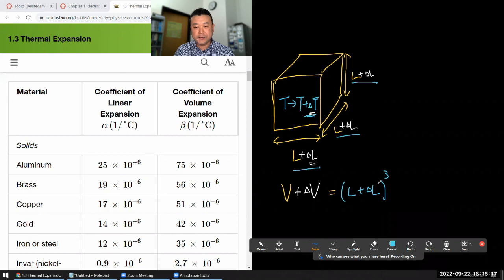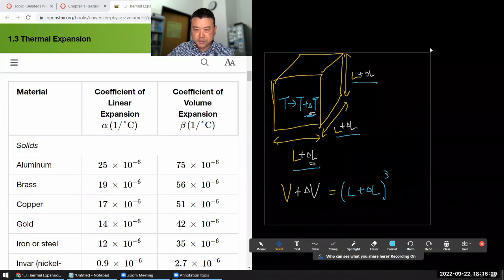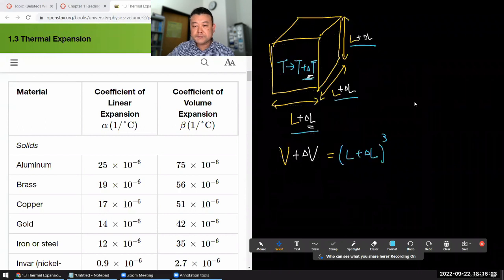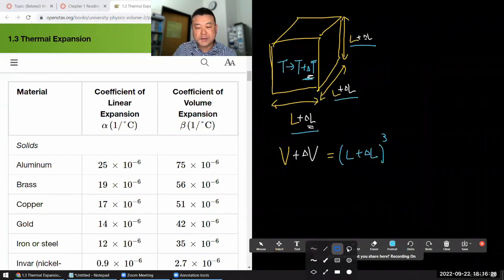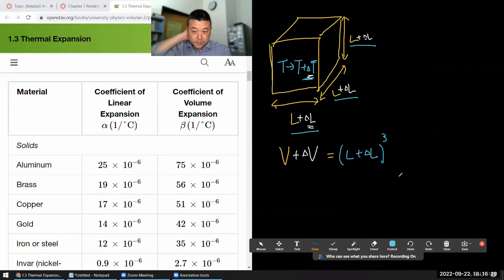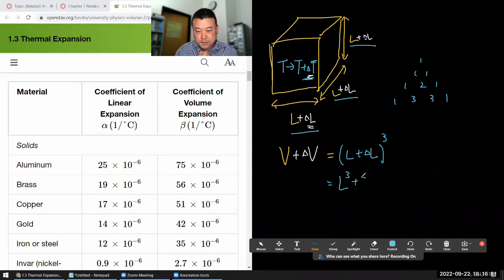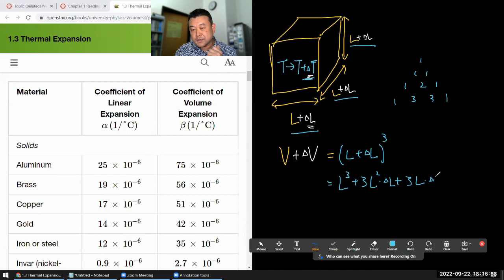If you're just looking at this algebraically, it's looking a little bit daunting. Although, I think I can actually work this out algebraically. Let me just do that quickly. When I expand this out, it should be L cubed plus 3L squared times delta L plus 3L times delta L squared plus delta L cubed.